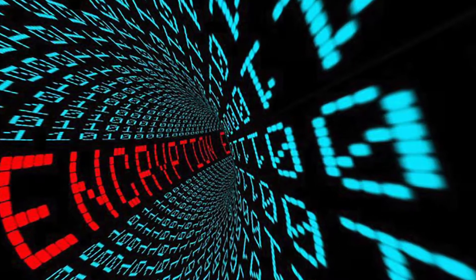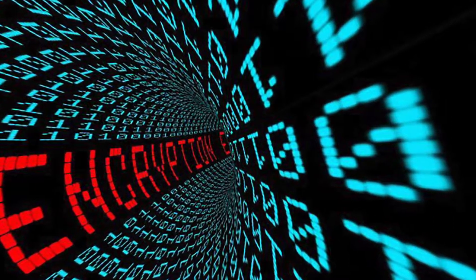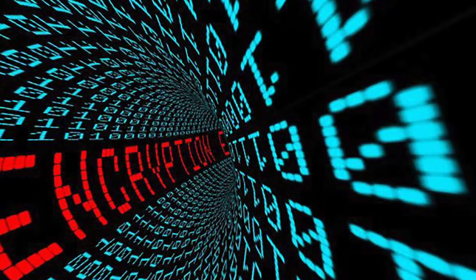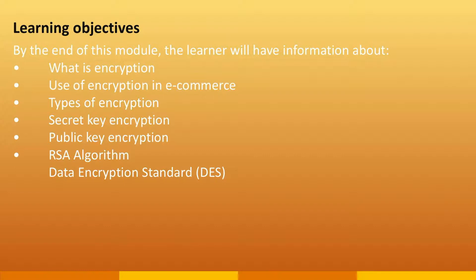One of the most adequate means of assuring data security and integrity is encryption. By the end of this module the learner will have information about what is encryption, use of encryption in e-commerce, types of encryption, secret key encryption and public key encryption, RSA algorithm, and DSA encryption standard.